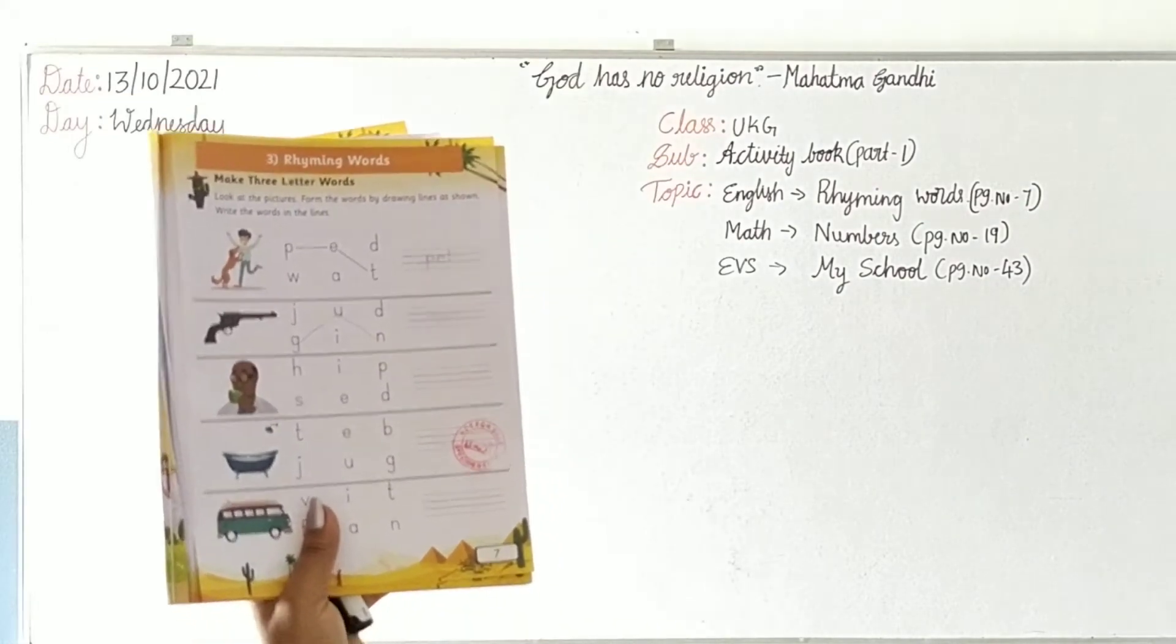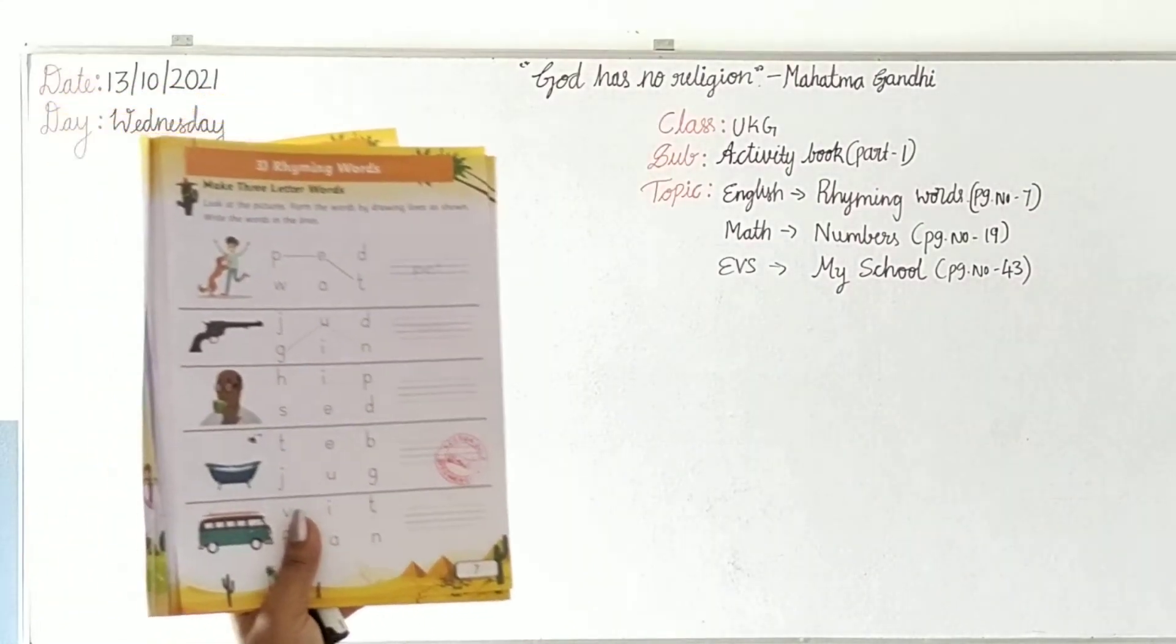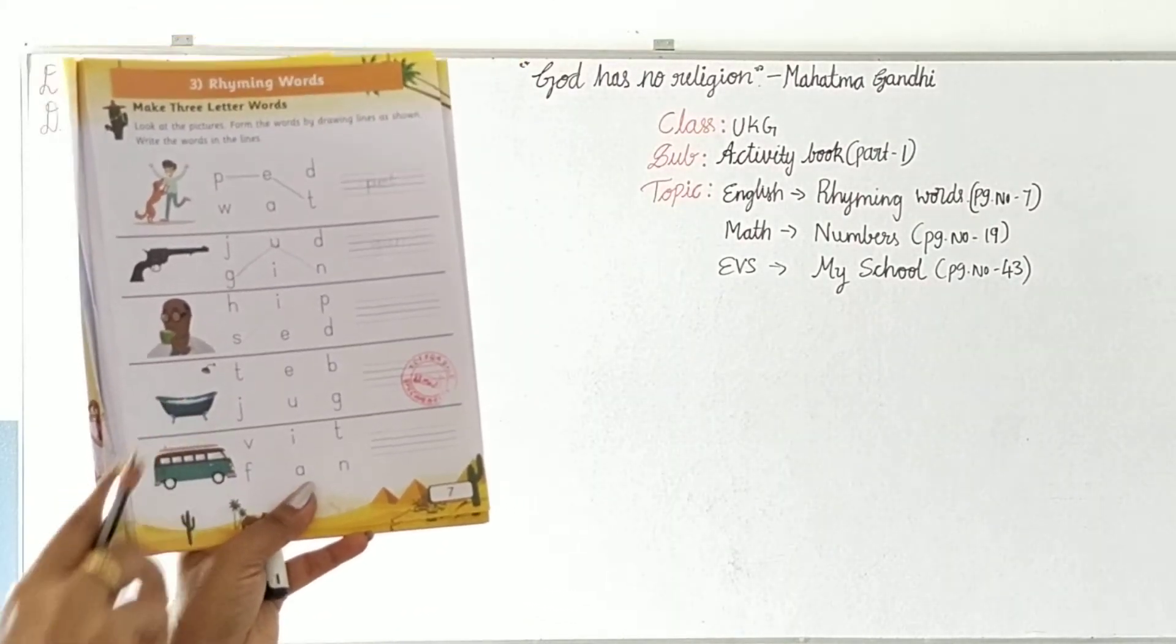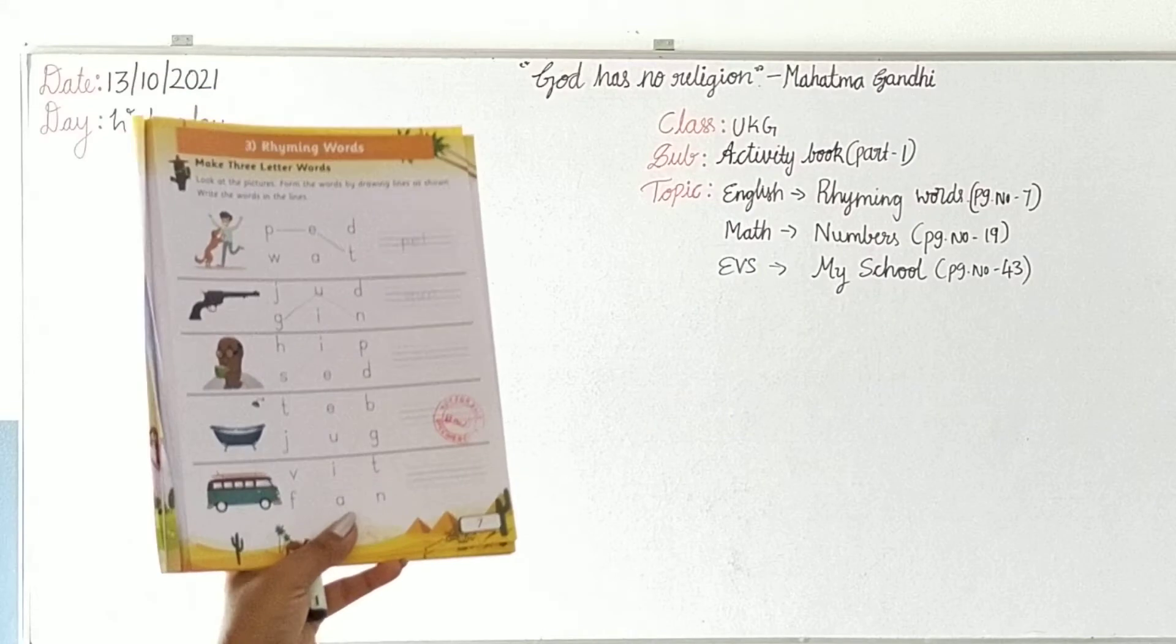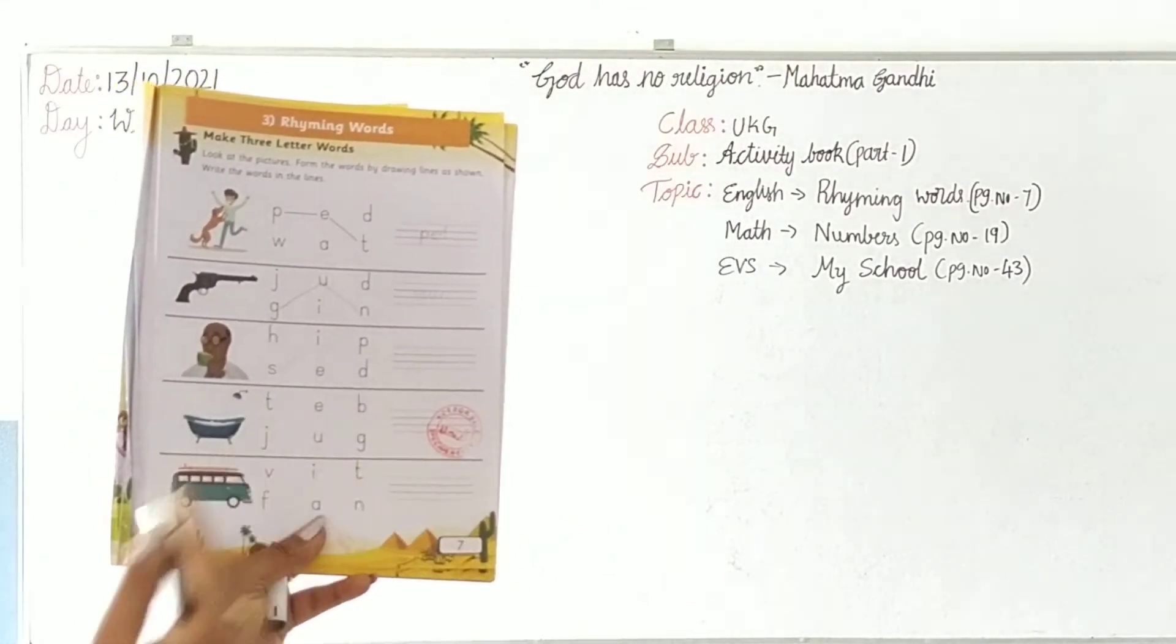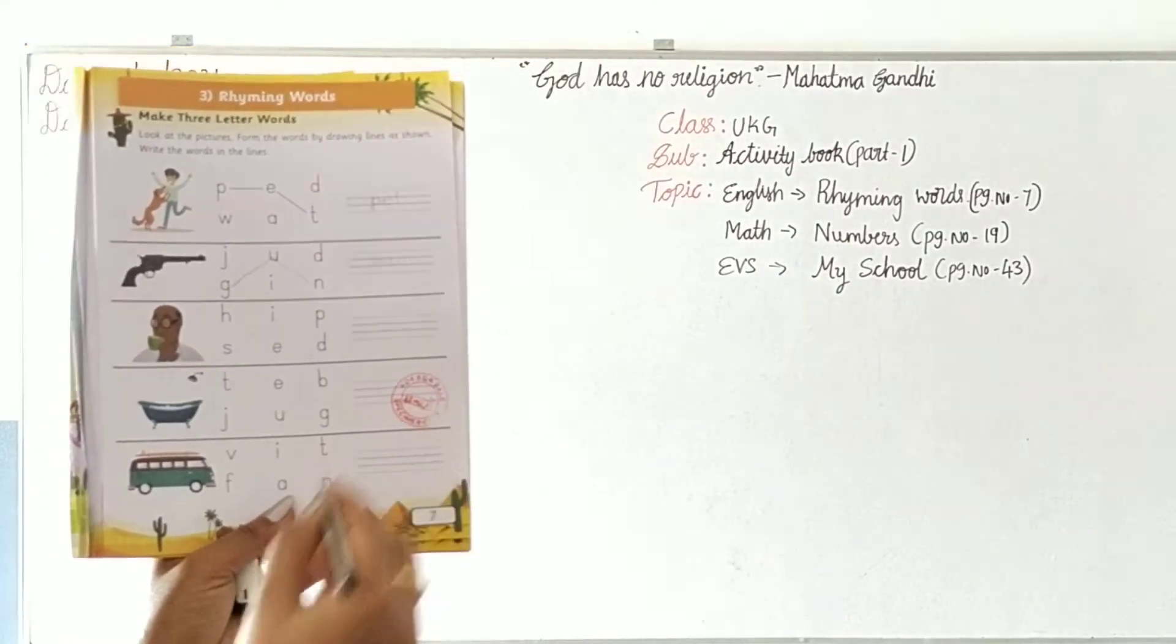So S-I-P, sip. Write the word S-I-P. Next, what is it? It was a tub, bath tub, isn't it? T-U-B, tub.